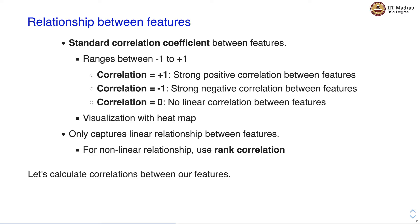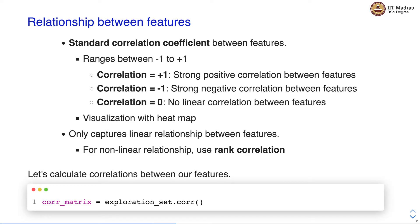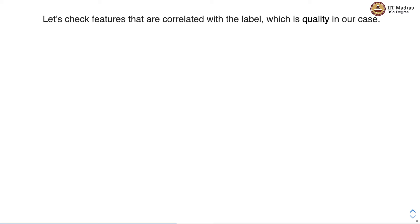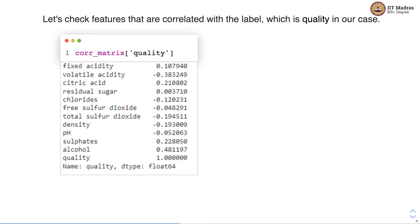Let us calculate the correlation between our features. We can use the corr function for calculating correlations between features. Looking at the features correlated with the label — in our case the quality of the wine — you can see that sulfates has a correlation coefficient of 0.22, alcohol has a correlation coefficient of 0.48, which is probably the most strongly correlated feature with wine quality. Whereas volatile acidity is probably the most strongly negatively correlated feature with wine quality.